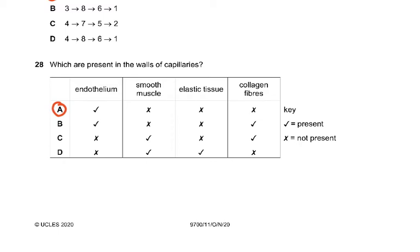Question 28: Which are present in the walls of the capillaries? Capillaries and all blood vessels have endothelium. The only answer was A. Endothelium is present in all blood vessels - arteries, veins and capillaries. Capillaries have only endothelium, nothing else. No smooth muscle, elastic tissue, or collagen fibers. It's only a one cell thick wall of the capillary, which is called endothelium.